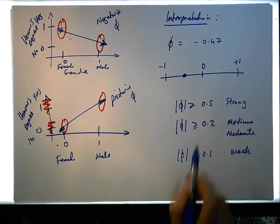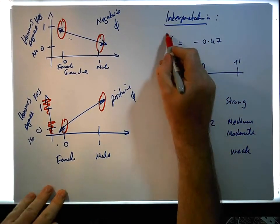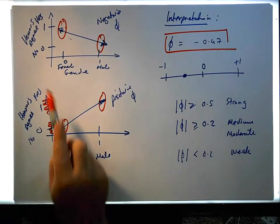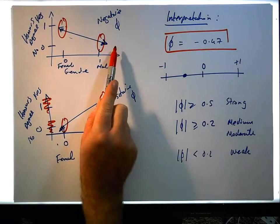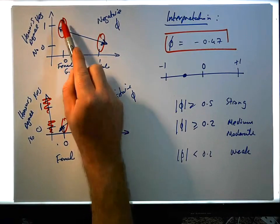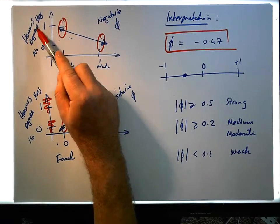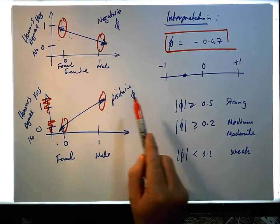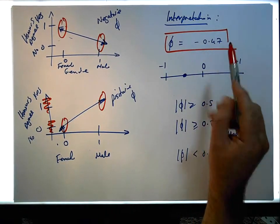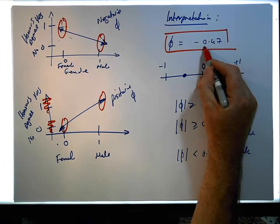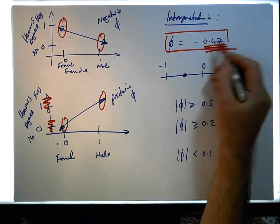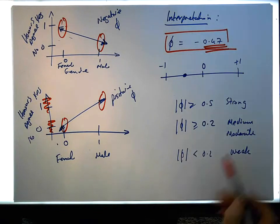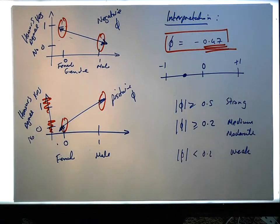So in our case here, the correlation coefficient was negative, so it's in this situation here, which means females typically are scoring high on the dichotomous variable honours degree, whereas males are typically scoring low on that. And the number 0.47 would indicate the strength of association, which is between 0.2 and 0.5, so there's a medium to moderate association between these two variables.